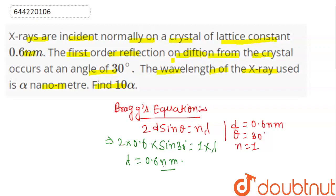Okay, here we find 10 alpha. This is lambda. Lambda equals alpha equals 0.6 nanometer.